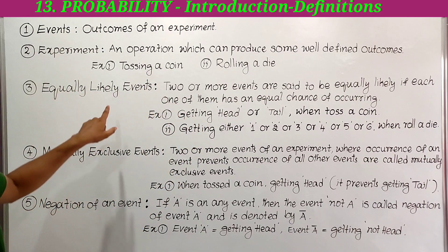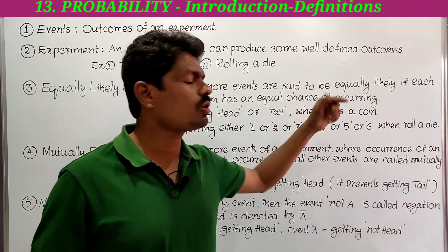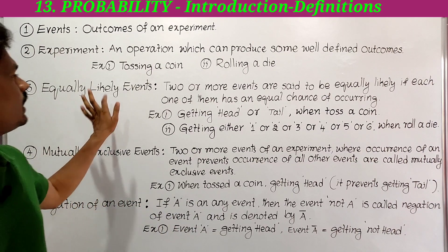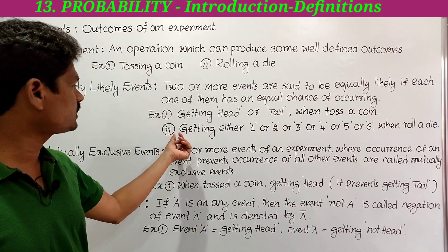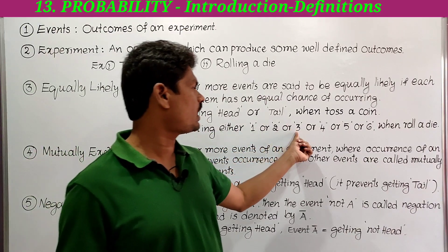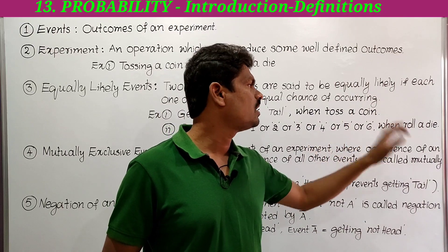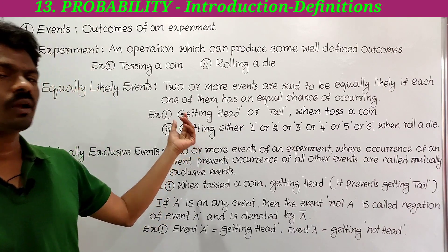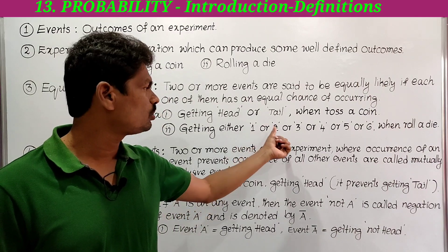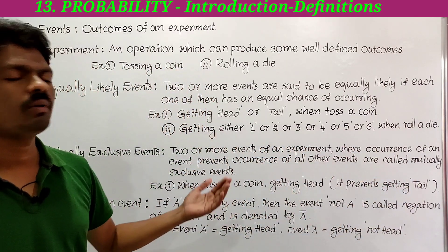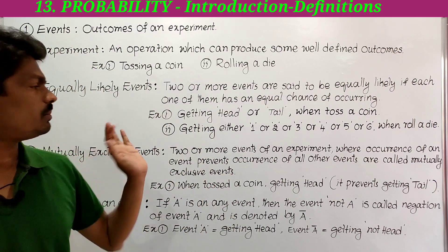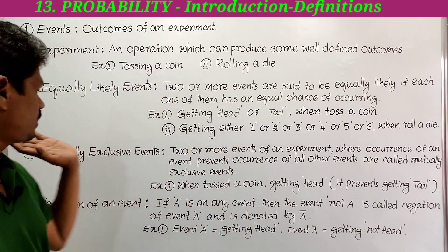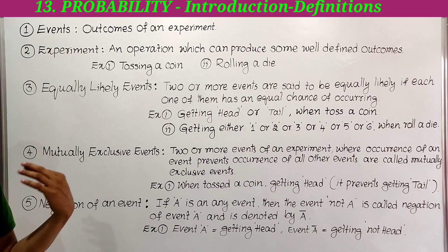Getting head or tail when tossing a coin are equally likely events. In the same way, getting either 1, 2, 3, 4, 5, or 6 when rolling a die — each has an equal chance of occurring. These are called equally likely events.